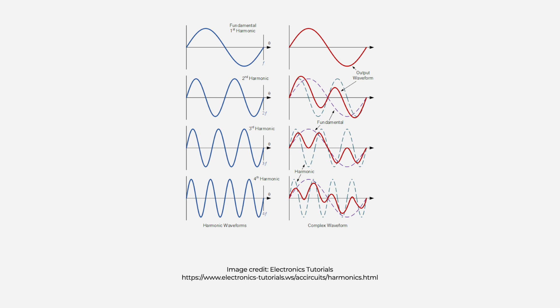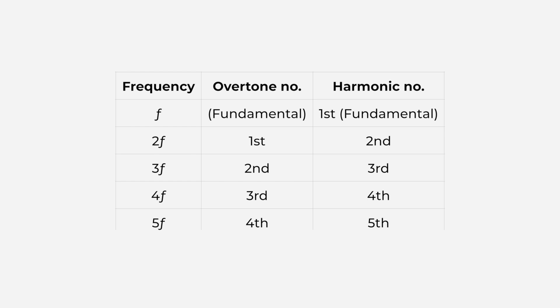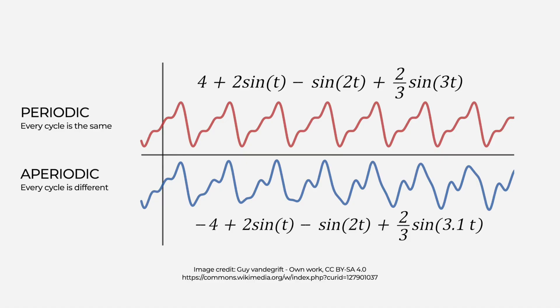The waveform of a harmonic sound is called periodic because every overtone begins and ends together with the fundamental tone. The integer overtones — those that follow an integer number progression — are called harmonics. We must follow two different naming conventions: for overtones, the fundamental is followed by the first overtone, second overtone, and so on; for harmonics, the fundamental is the first harmonic, then the second and third and so on, according to the integer number they refer to. An inharmonic sound has overtones that are not integer multiples of the fundamental frequency and they create an aperiodic waveform. Non-integer overtones are often called inharmonic partials, found in sounds like percussions or bells.